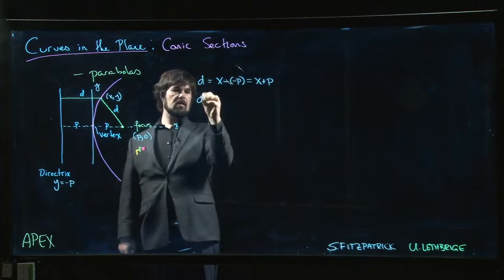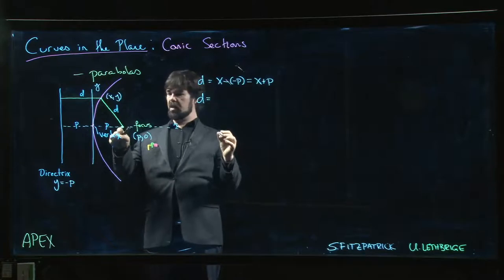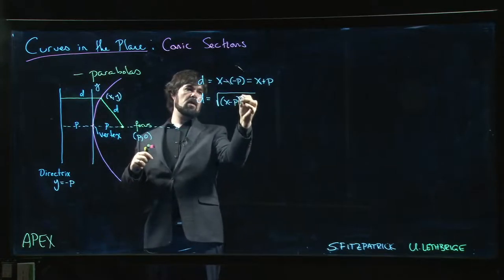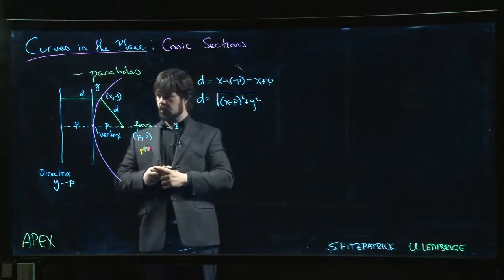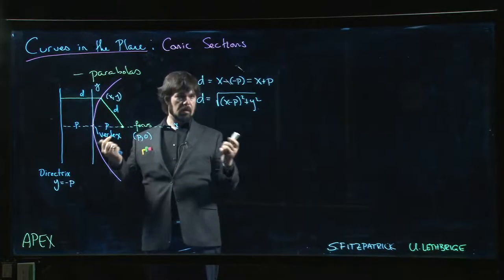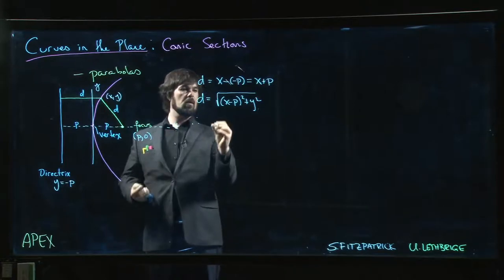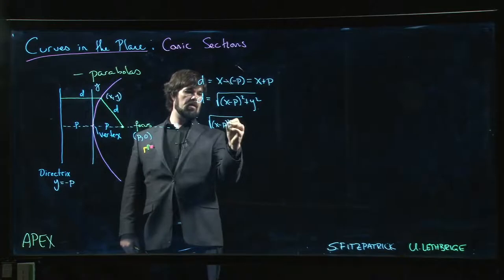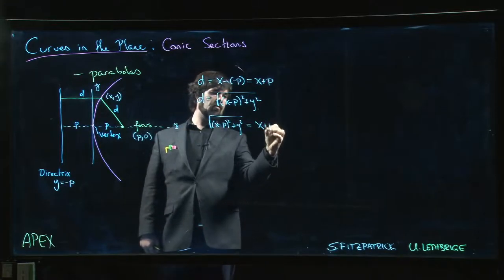On the other hand, d is the distance from here to there. So d is going to be the square root of x minus p squared plus y squared. So these should be equal. Square root of x minus p squared plus y squared should be equal to x plus p.